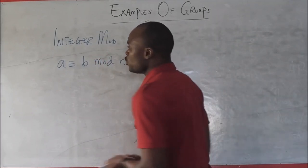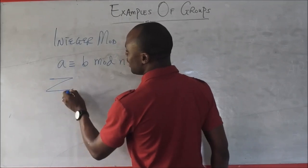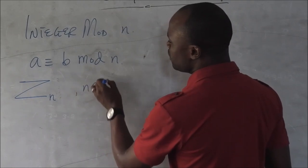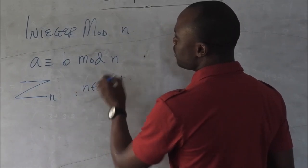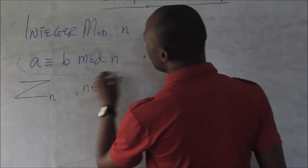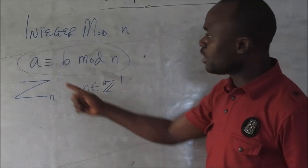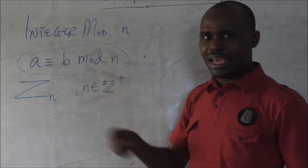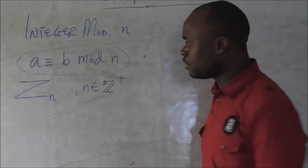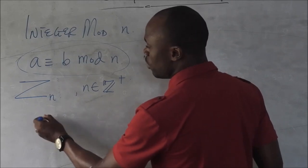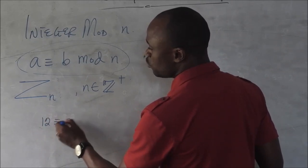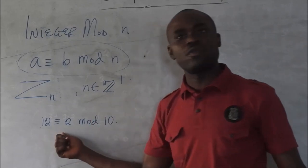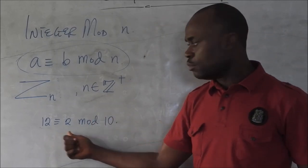Integer mod n, which we write as Z_n, where n is a positive integer. The congruence can be written as: a is congruent to b in mod n. For example, 12 is equivalent to 2 in mod 10.